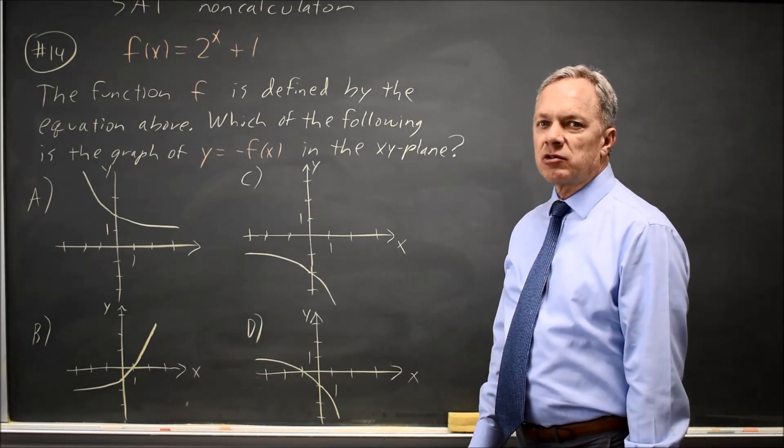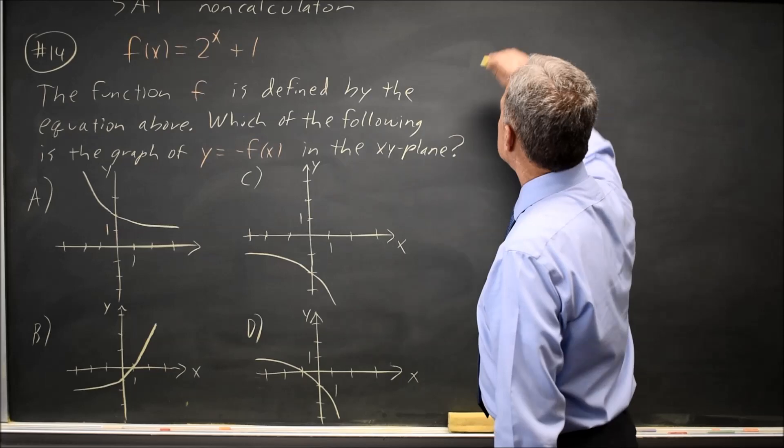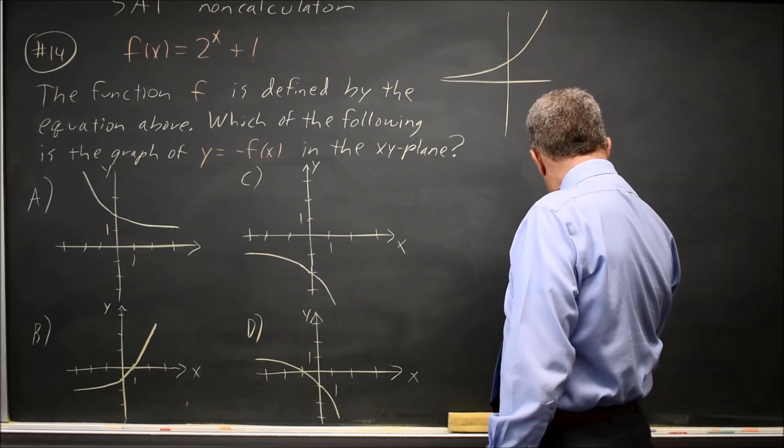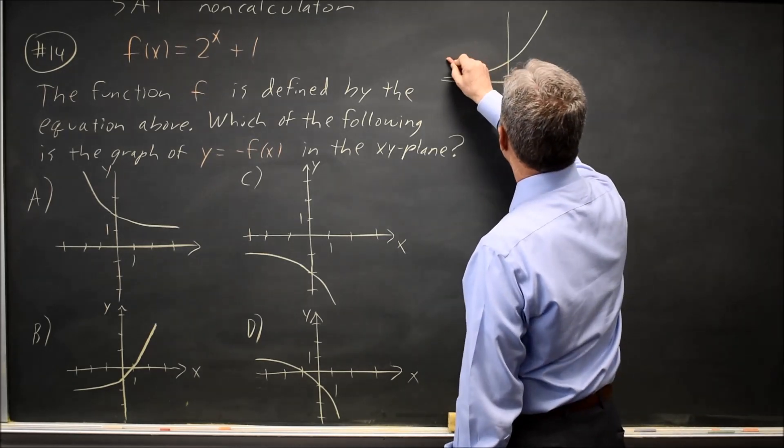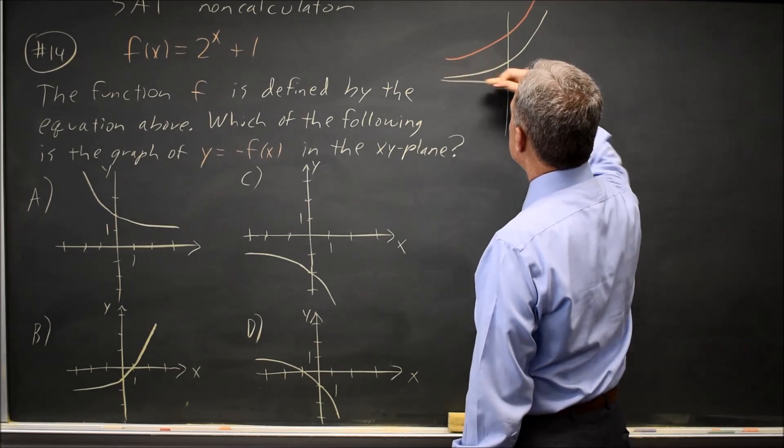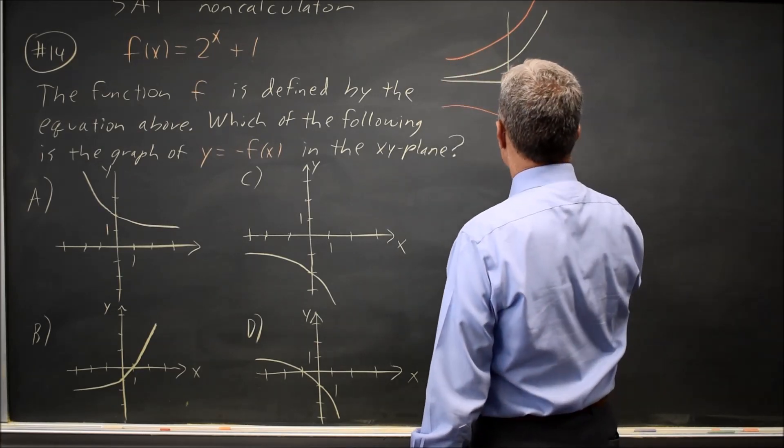If you already know the graph of an exponential, you may know that it shapes something like this. If we shift it up by 1, then it would be the pink graph here, and the negative of that reflects over the x-axis to look something like this.